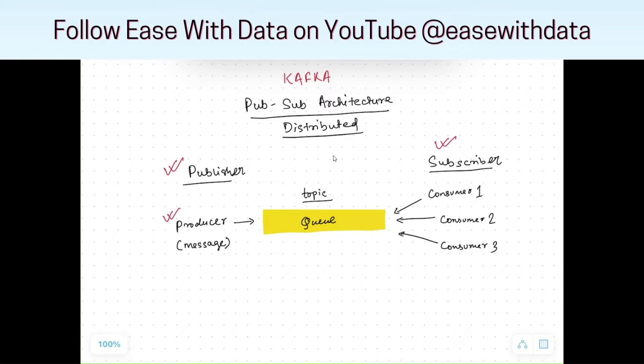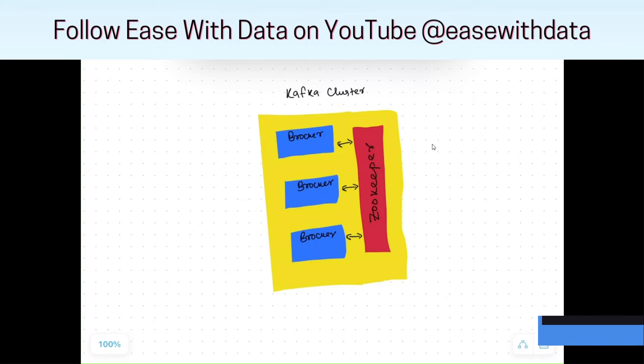Similarly, in Kafka terminology, we will have one topic in which the producers will produce some messages and the consumer will subscribe to that topic in order to consume those messages. We know that Kafka is a distributed service — it means it works in a cluster fashion.